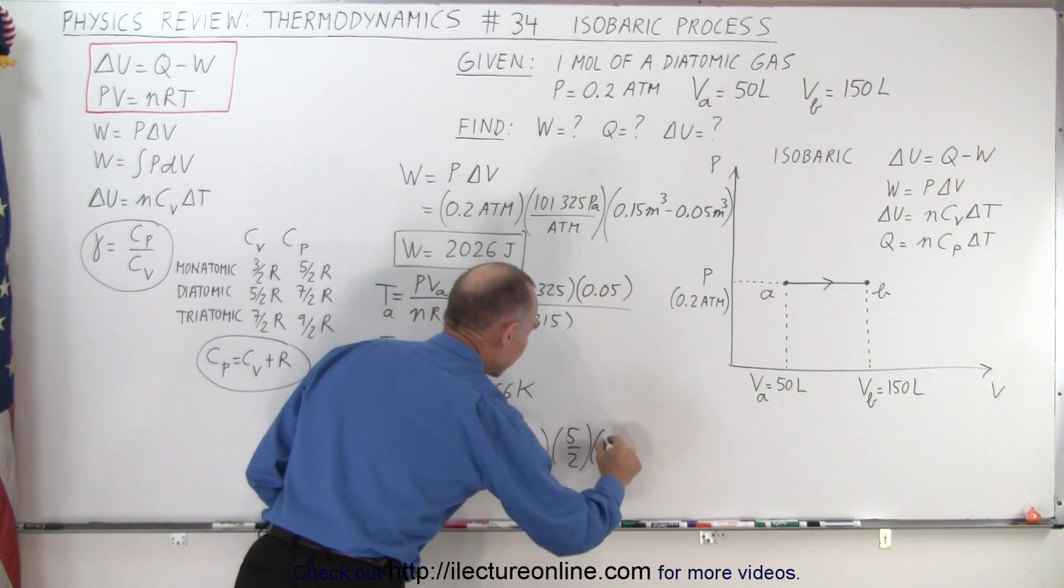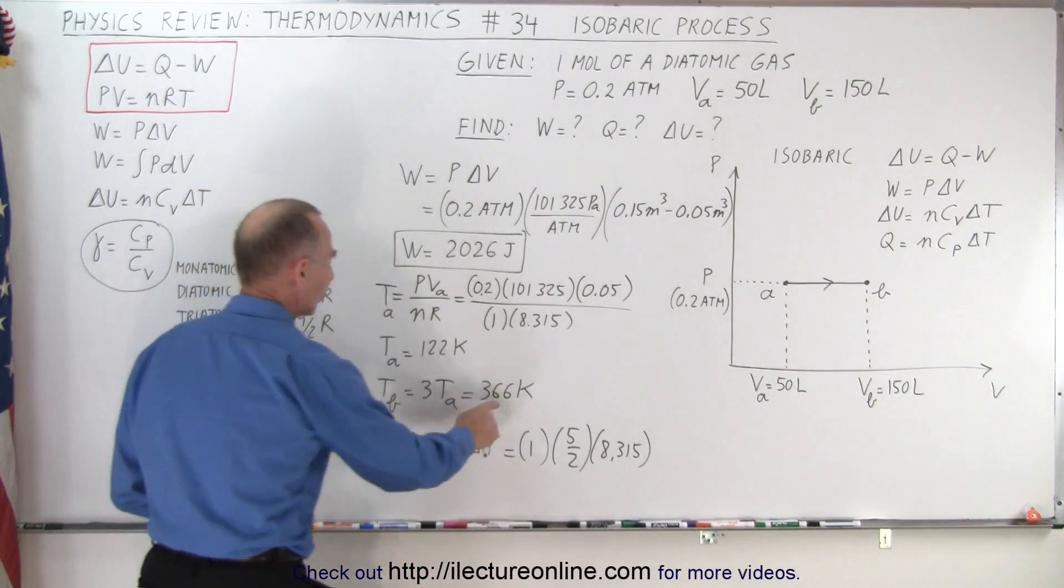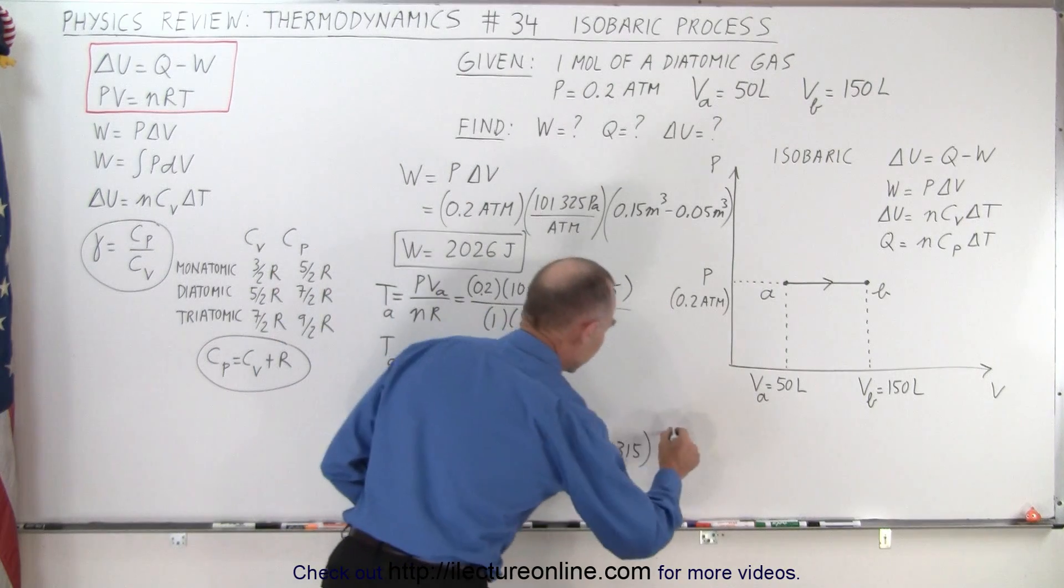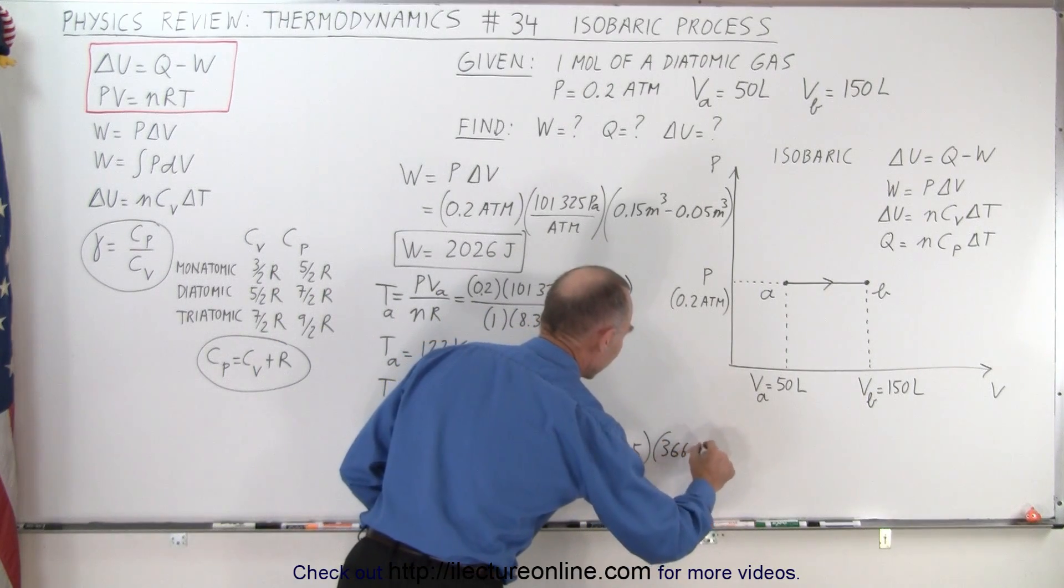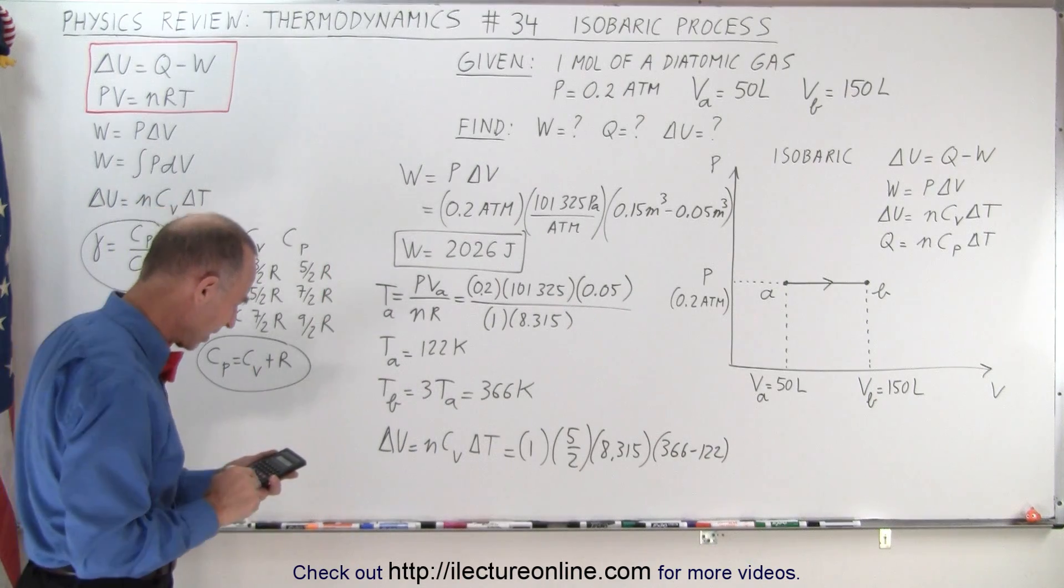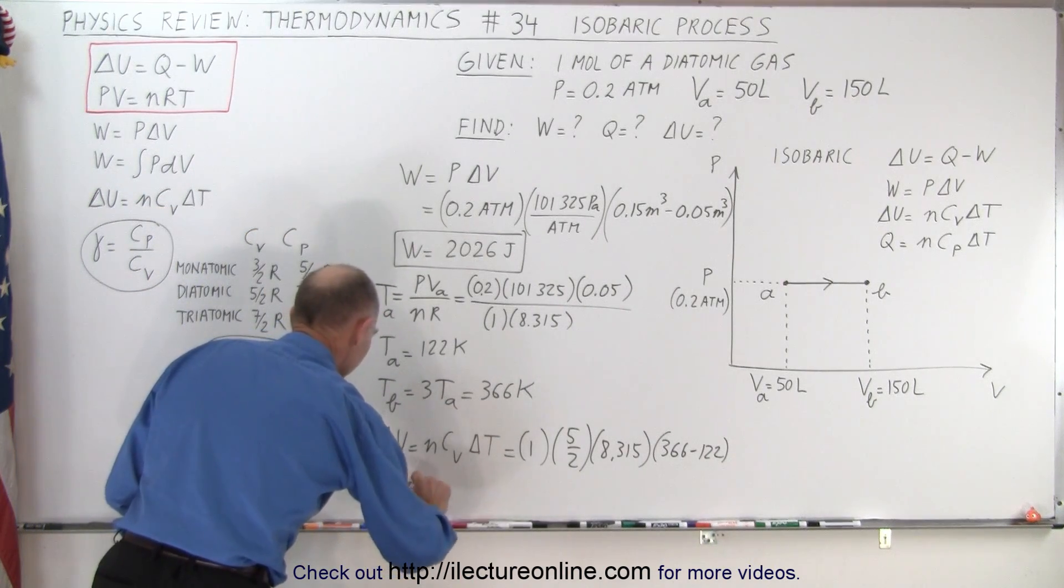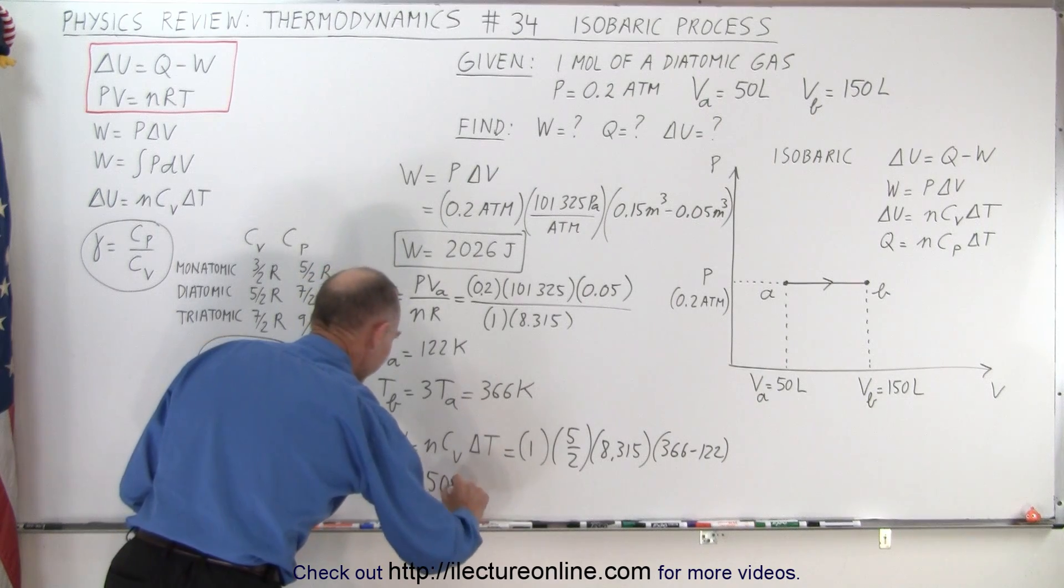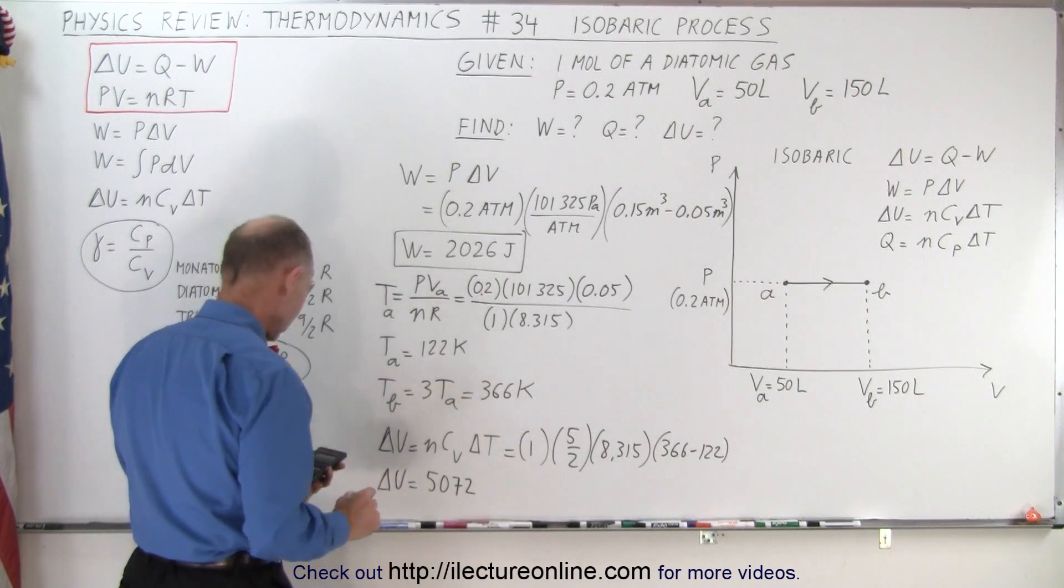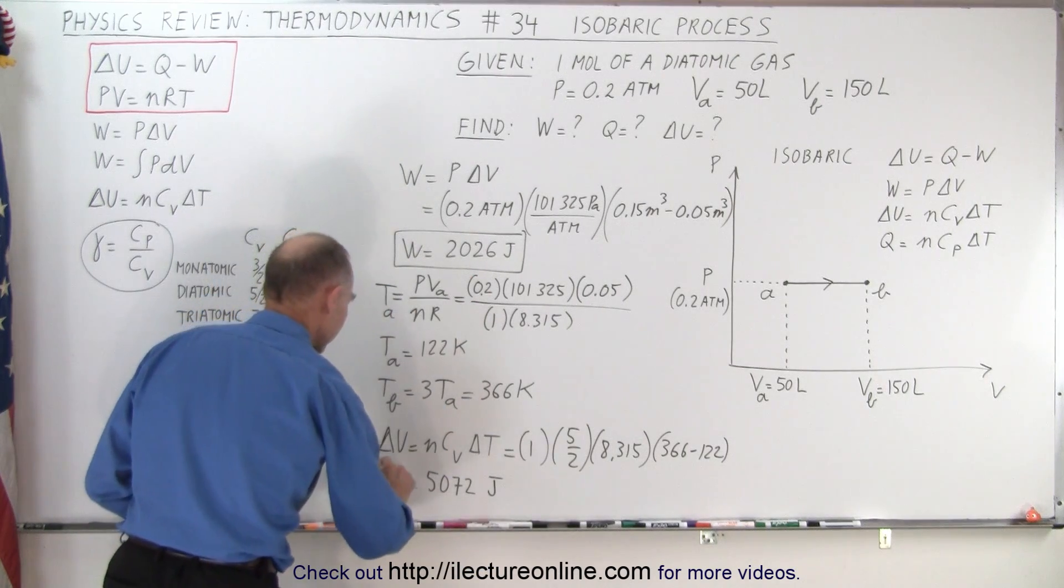So 5 over 2 and R is 8.315. Change in temperature from 366 to 122, so that would be 366 minus 122. And we have 5072. So delta U is equal to 5072 joules. So we have work done and we have delta U.